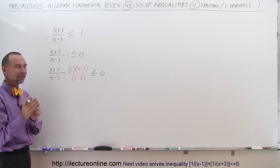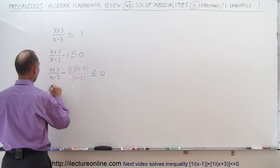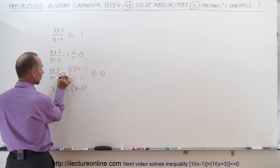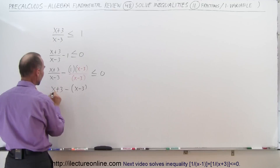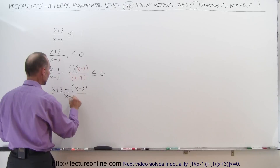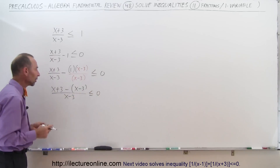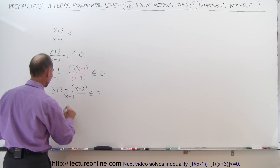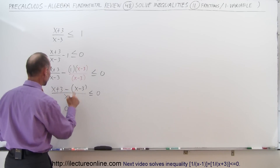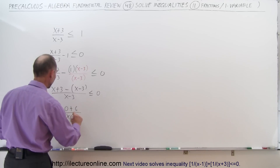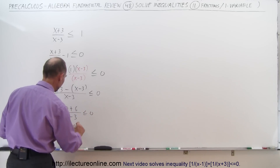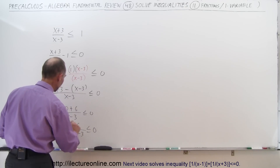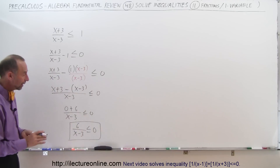Now we can write both terms over the same denominator: x plus 3 minus (x minus 3), divided by x minus 3, less than or equal to 0. Notice we use parentheses to avoid sign errors. Simplifying: x minus x is 0, and 3 minus negative 3 is positive 6, giving us 6 divided by x minus 3, less than or equal to 0.